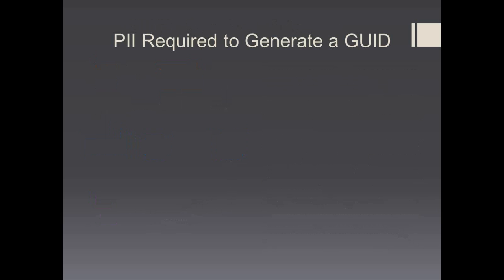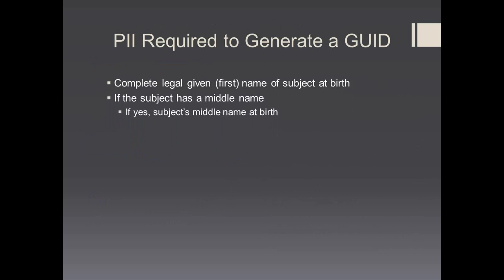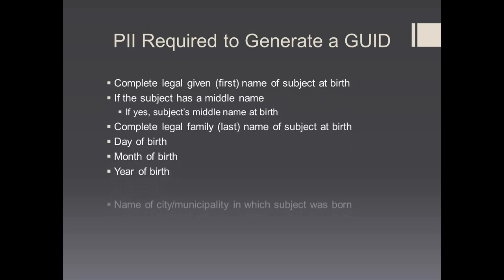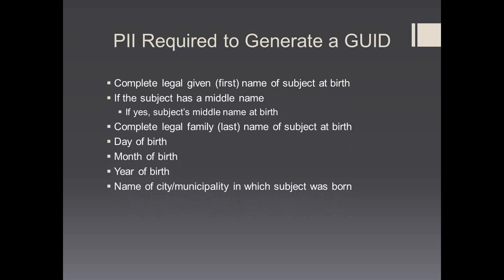The PII required to generate a GUID should be taken from the subject's birth certificate. It includes the complete legal given first name of a subject at birth; if the subject has a middle name, the subject's middle name at birth; the complete legal family last name of a subject at birth; the subject's day, month, and year of birth; the name of the city or municipality in which the subject was born; and the subject's country of birth. All PII is required to generate a GUID. If any PII is missing, a pseudo-GUID will be required.